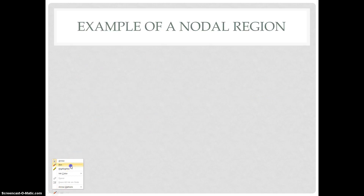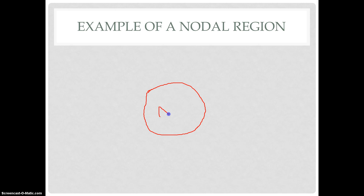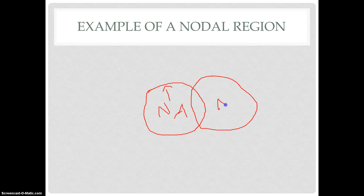Let me draw an example of a nodal region. Say you have a newspaper delivery store — Newspaper A. Its area of influence is a circle around it, and as you get farther away, its influence decreases. You can also have Newspaper Distributor B nearby, and as you can see, their areas of influence overlap. This enforces the fact that nodal regions can overlap, and that as you get farther from the node, influence decreases. Nodal regions exist because there is usually a man-made structure in the center serving as a node or point of influence.